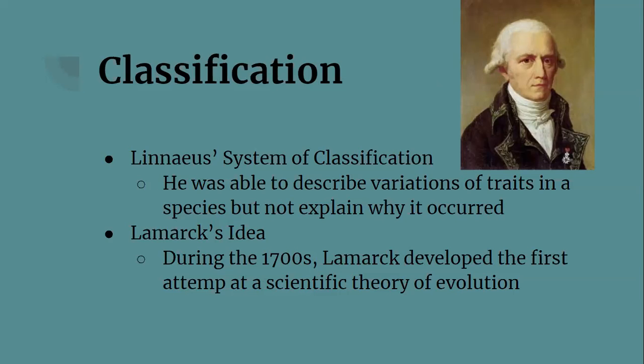During this time, people were extremely religious and believed animals were simply created, so Linnaeus wasn't taken very seriously. Lamarck — Jean Baptiste Lamarck — was a French scientist put in charge of a museum department of insects and worms, which also included all invertebrates, or animals without backbones. Lamarck devoted himself to learning everything he could about these invertebrates. Unlike Linnaeus, Lamarck wasn't focused on just describing what animals looked like — instead he attempted to figure out how organisms came to be. He developed the first attempt at a scientific theory of evolution.